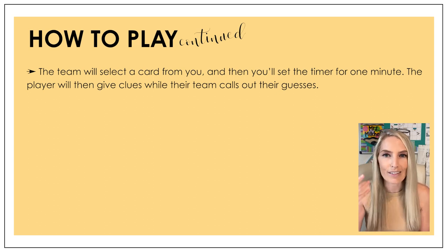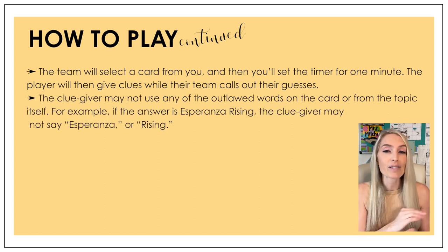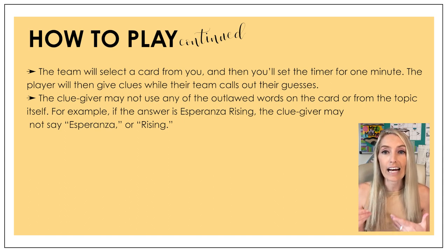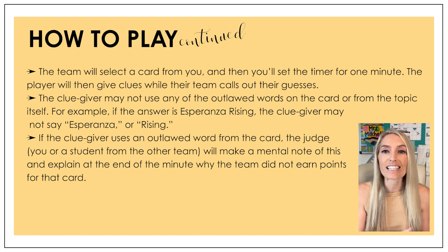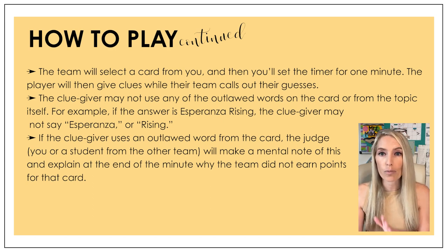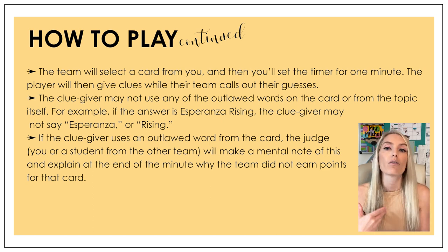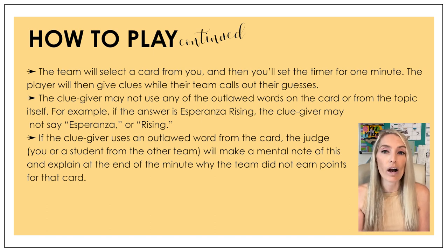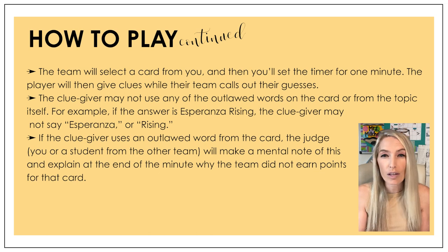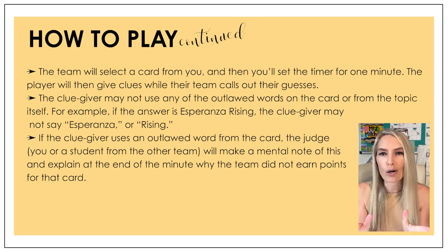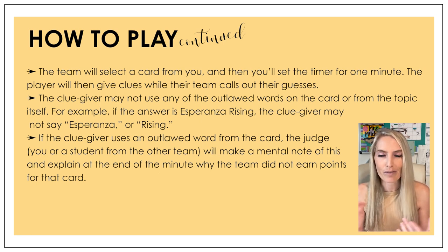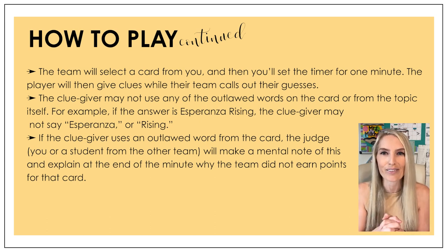If you've played Taboo, you're visualizing this. If you haven't, it's like the best game ever — go play with your family. The clue giver may not use any of the outlawed words on the card or from the topic itself. So for example, if the answer is Esperanza Rising, the clue giver obviously can't say Esperanza or Rising. If the clue giver uses any outlawed words, the judge — which could be you or a student from the other team — will note it and explain at the end of the minute why the team did not earn points for that card. You can even use a buzzer like the game Taboo does to buzz students if they say a word they're not supposed to.